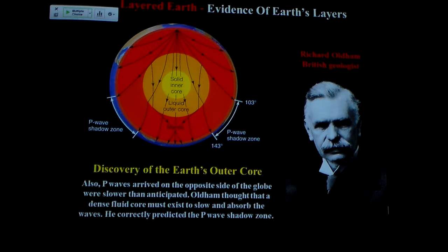Yes? Wouldn't the shadow zone change relative to where the P wave would start? Oh, sure. If the P wave, say, started at the equator, the P wave shadow zone would be 103 degrees each way from that to 143 degrees. So, yeah, just as I move the earthquake focus around, the P wave shadow zone is going to move around on the opposite side with it. Exactly.